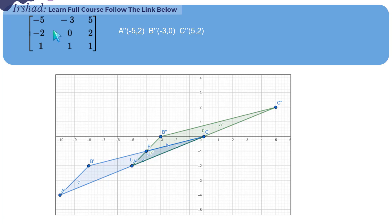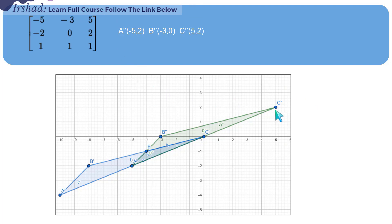Looking at the final composite matrix result, we can verify: the values (-5,-2) and (-3,0) appear, and C's coordinates show (5,2) — exactly as required. Point C remains fixed at (5,2), confirming the solution is correct.